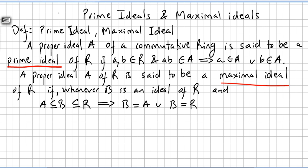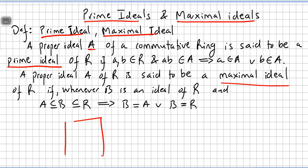This video will be about prime ideals and maximal ideals. We begin with the definition of a prime ideal. A proper ideal A of a commutative ring R — we have a ring and a subring which is an ideal, so it absorbs products. A is a proper ideal of a commutative ring.